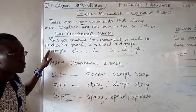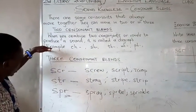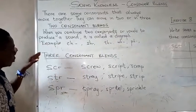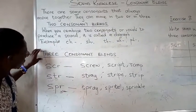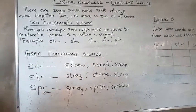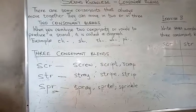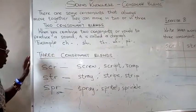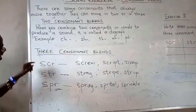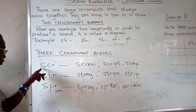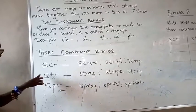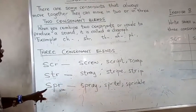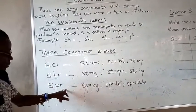Now today, we are coming to learn or continue on the three consonant blends. For the three consonant blends, we have the SCR, the SPR, and the STR.